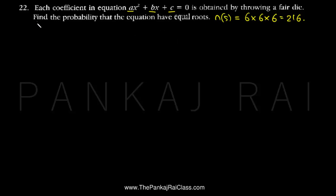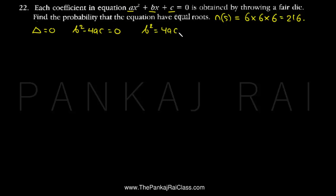Now what is the question asking? The question asks us to find the probability that the equation has equal roots. We know that a quadratic equation will have equal roots when the discriminant delta = 0, that means b² - 4ac = 0, or equivalently b²/4 = ac.